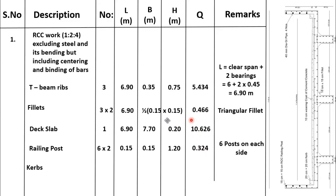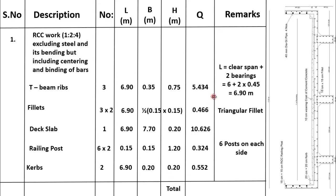We will also calculate concrete quantity for kerbs. The total number of kerbs is 2, one on each side. Its length is 6.90 metres. Its cross-sectional dimension is 0.20 × 0.20 metres. After simple calculation, the total quantity for kerbs is 0.552 cubic metres. Now, the total RCC work quantity is obtained by summing all these quantities. The total quantity of RCC work in 1:2:4 concrete is 17.402 cubic metres.